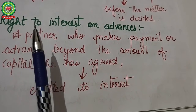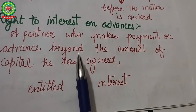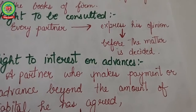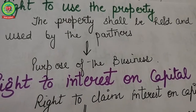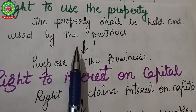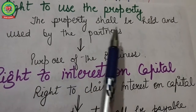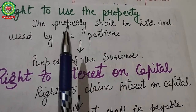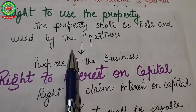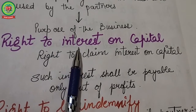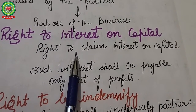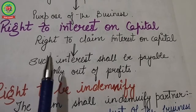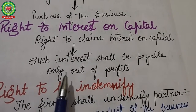Next is the right to interest on advances: a partner who makes any payment beyond the amount agreed is entitled to get interest at the prevalent rate. Next is the right to use property: the property of the business shall be held and used by partners only for the purpose of business, and no partner can treat business property as his individual property. Next is the right to interest on capital: the partnership deed may provide a right to claim interest on capital, payable only out of profits.